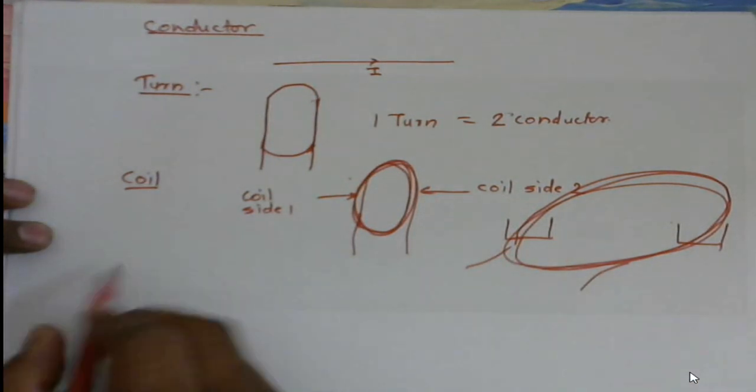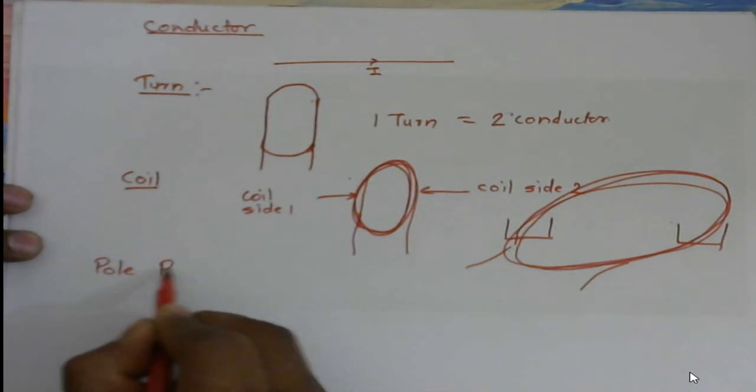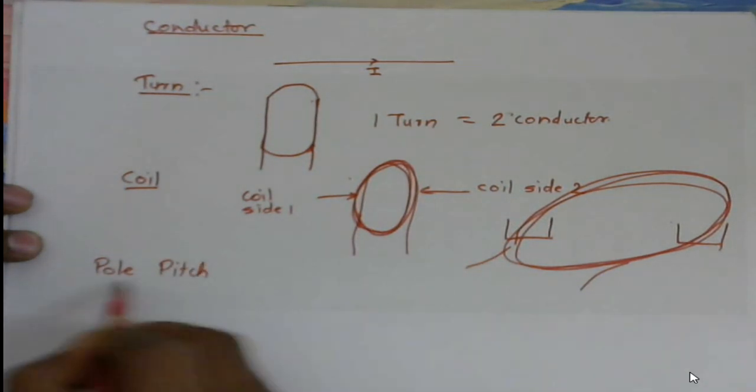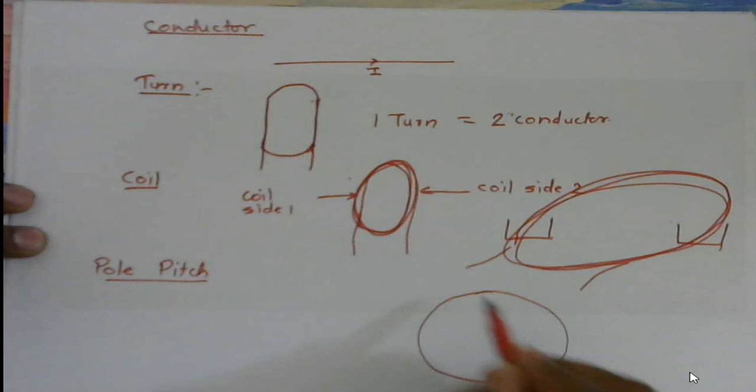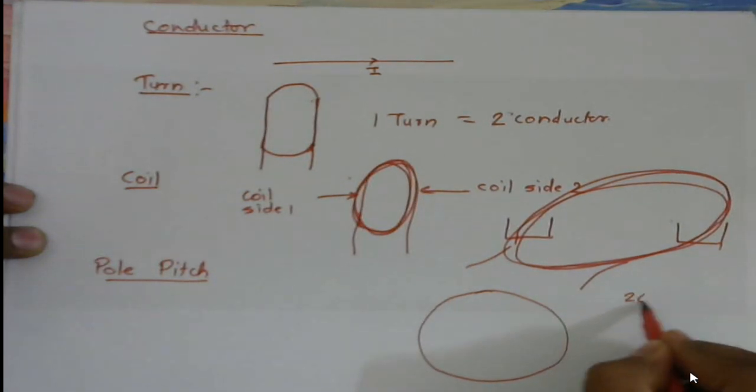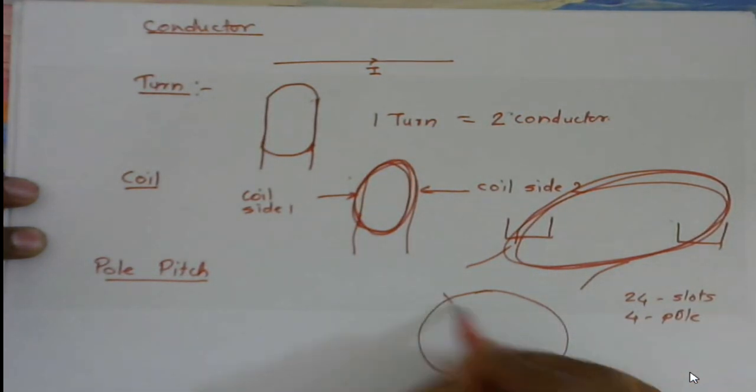After this, let us talk about pole pitch. Let us take one example. Suppose this is a motor and it is having 24 number of slots, and we have to design it for four-pole. So let us divide this into four parts: pole one, pole two, pole three, pole four.